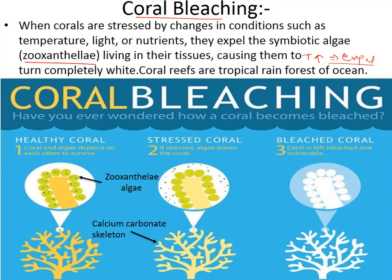In the diagram, figure one shows corals with a yellow color, indicating adequate zooxanthellae algae — these are healthy corals. Figure two shows corals with a slightly lighter color, indicating a stressed condition where corals have begun to expel their zooxanthellae algae. Figure three shows corals turned completely white, meaning they have expelled all zooxanthellae algae — this is full coral bleaching.